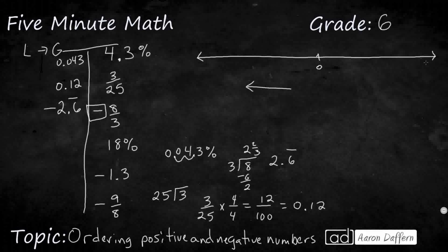18 percent, that's pretty simple. You've got a decimal after the ones place. Once, twice. So I've got 0.18.